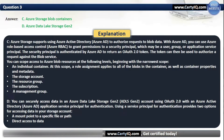You can securely access data in an Azure Data Lake Storage Gen2 account using an OAuth 2.0 token with an Azure Active Directory application service principal for authentication. Using a service principal for authentication provides two options for accessing data in your storage account: mount point to a specific file or path, and direct access to data.